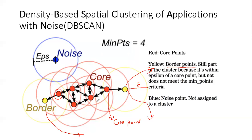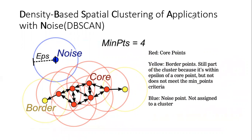This is how the DB scan algorithm works overall — it goes from one point to another, creates a boundary of radius epsilon, tries to find the necessary core points, and classifies each point as a core point or border point. When it finds a core point or border point, it creates a cluster. When it finds a noisy point, it does not create a cluster. DB scan works very well with noisy points because they are never taken into a cluster.